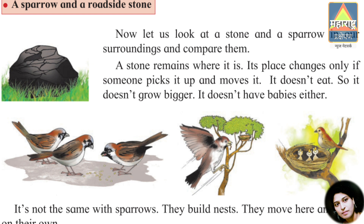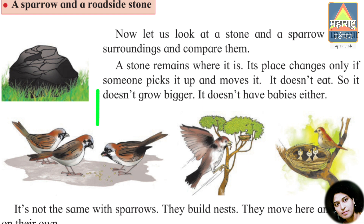A stone doesn't eat, so it doesn't grow bigger. It doesn't have babies either. It is not the same with a sparrow. Sparrows build a nest. They move here and there on their own. They eat insects and grains, and that is why they grow.